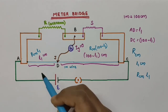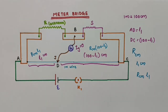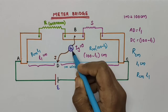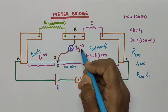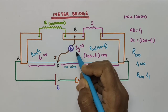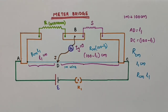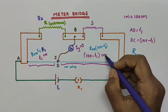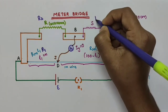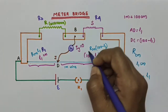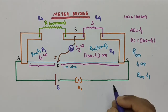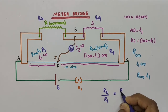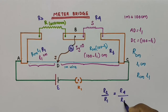This is just quite like a Wheatstone bridge now. When the jockey reaches point D, the galvanometer shows 0 deflection, 0 current — that is IG equal to 0 — that is the balance condition. Taking this resistance as R1, this as R2, this as R3, and this as R4, it is quite like a Wheatstone bridge. In the balance condition, R2 by R1 equals R4 by R3.